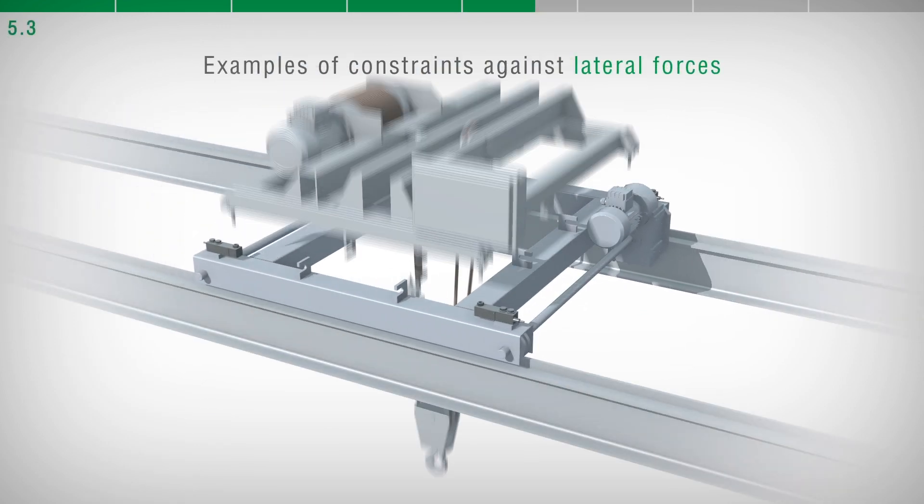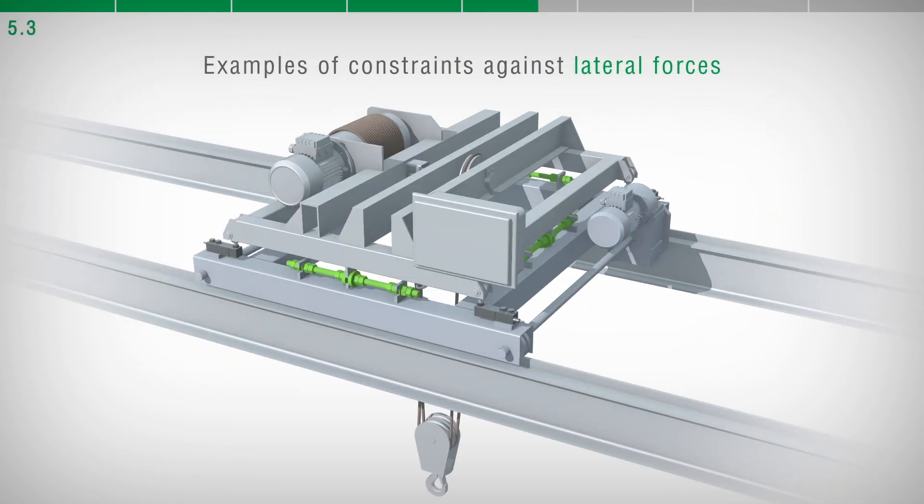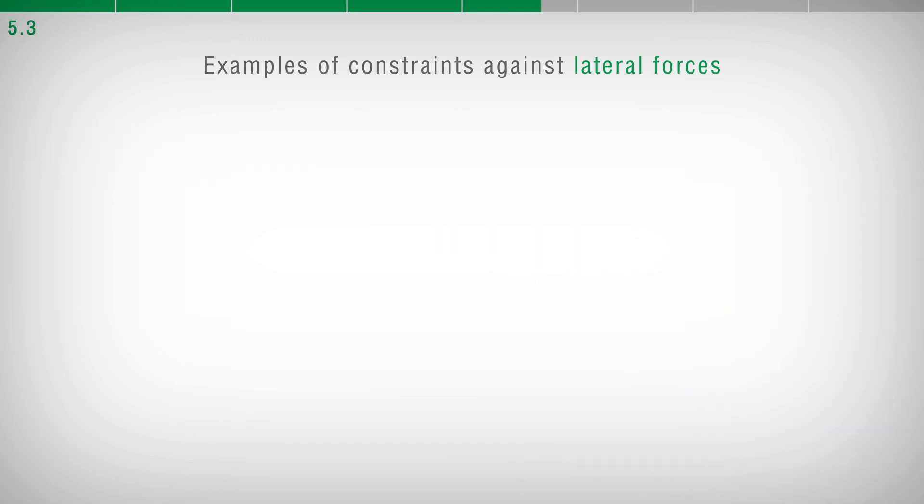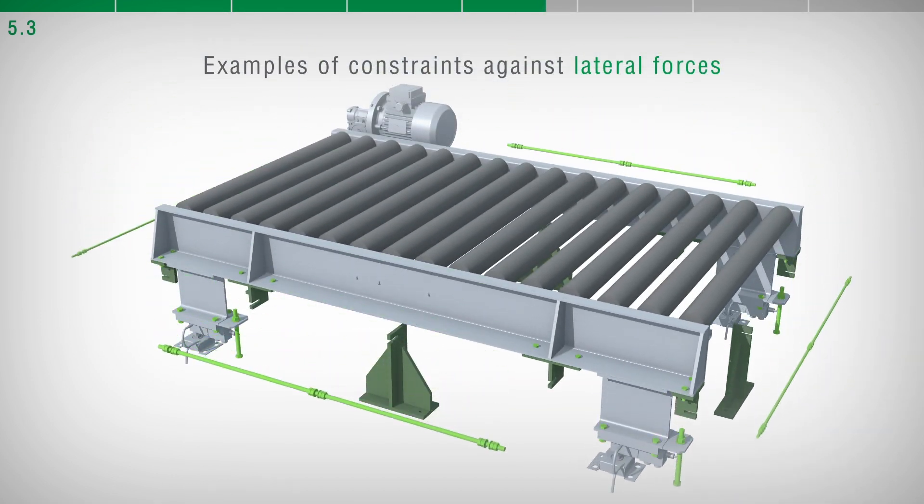Making constraints able to act against the horizontal forces allows the load cells to work correctly, avoiding potentially damaging stresses.